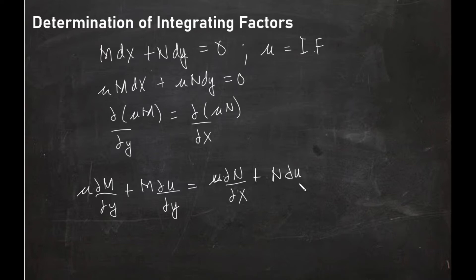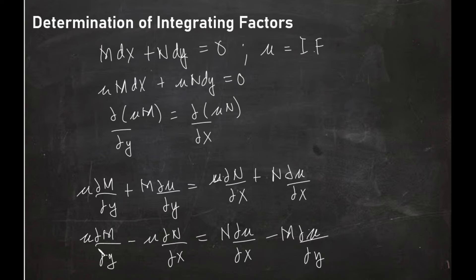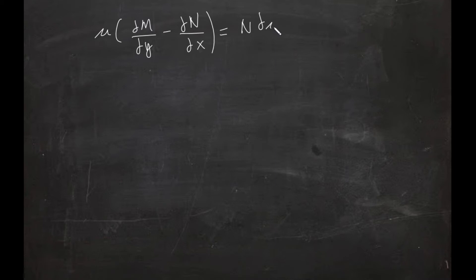the partial derivative of mu with respect to x. So rearranging to solve for mu, we get mu times the partial derivative of M with respect to y, minus mu times the partial derivative of N with respect to x, is equal to N times the partial derivative of mu with respect to x. Factoring the integrating factor gives mu times the quantity (partial derivative of M with respect to y minus partial derivative of N with respect to x) equals N times d(mu)/dx minus M times d(mu)/dy.